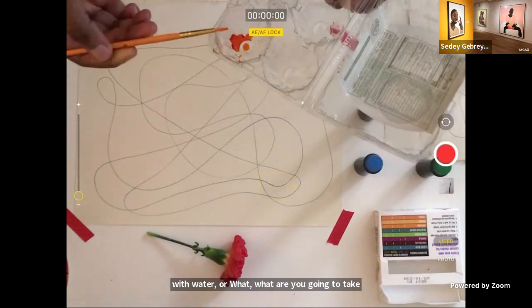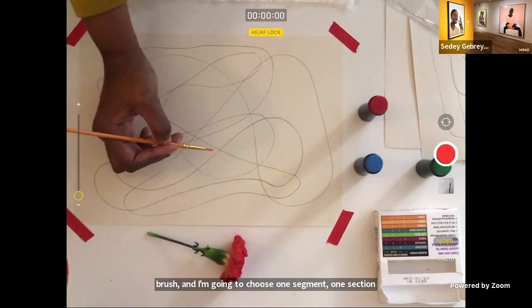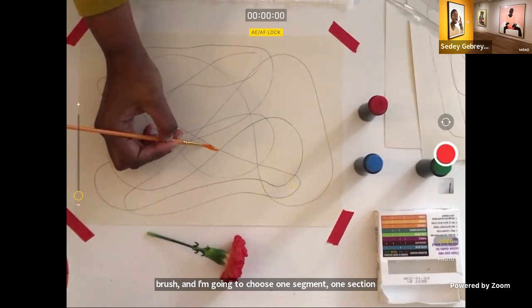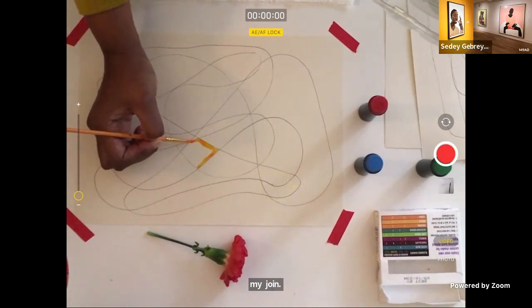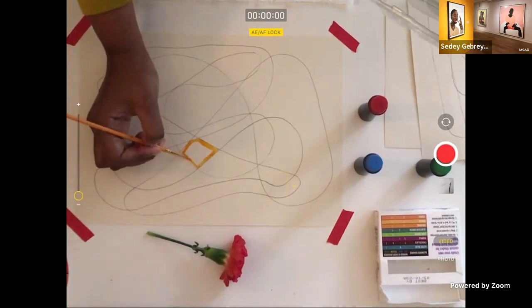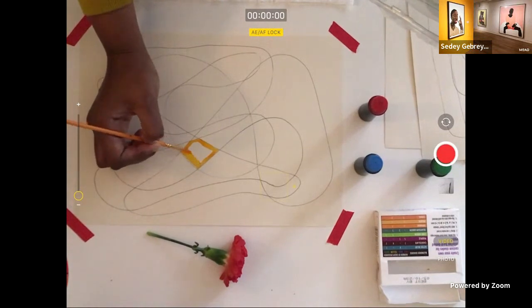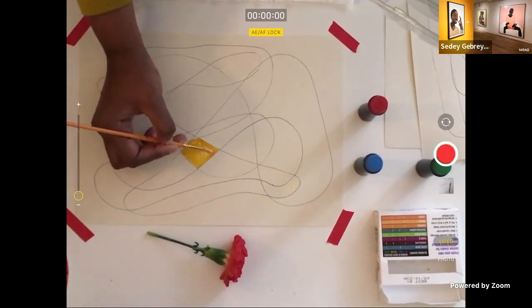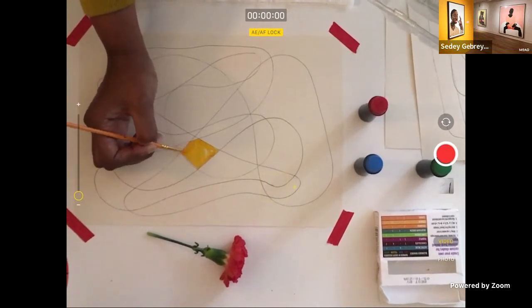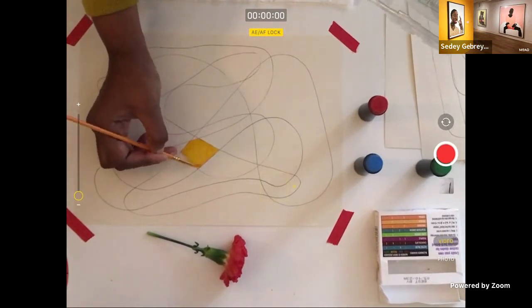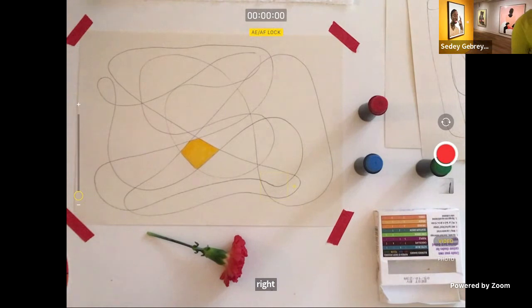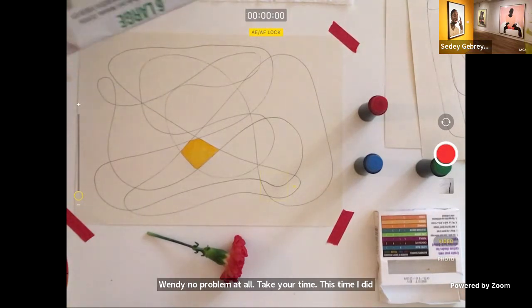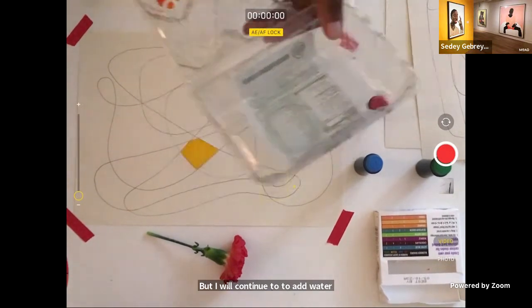Now without diluting it with water or mixing it with water or watering it down, I'm going to take my brush and I'm going to choose one segment, one section of my drawing and I'm going to pick it. All right. Any questions?